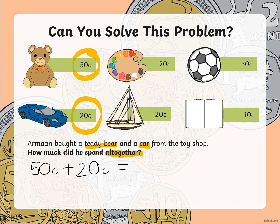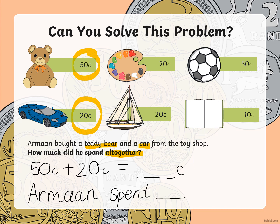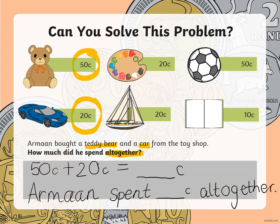So what is 50 cents plus 20 cents? You're going to write your answer and don't forget your unit. And our problem solving sentence is going to say: Arman spent something cents all together. Remember you need to write your sum and then your sum sentence.